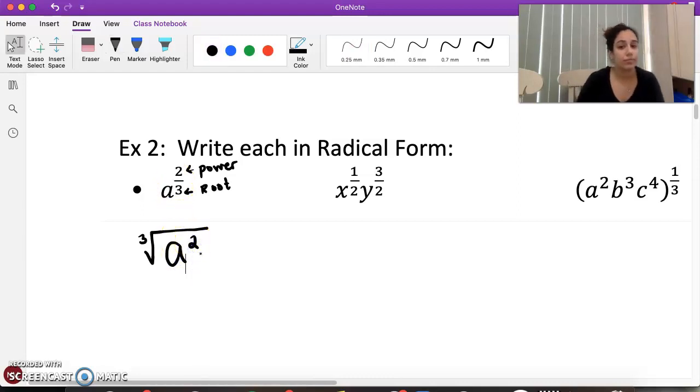What about the other way around? Write in radical form. So radical form, we have A to the two thirds. Here is my power. Remember, it's power over root. So I'm going to write my radical. My root is three, so it is a cube root of A, same base, squared. There's my power. Power root.